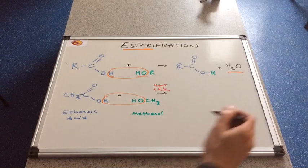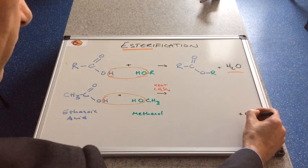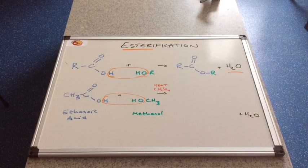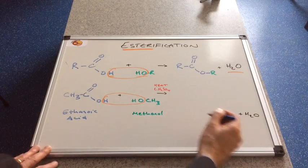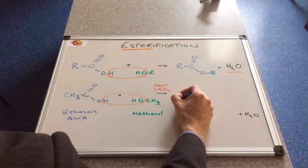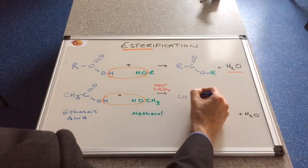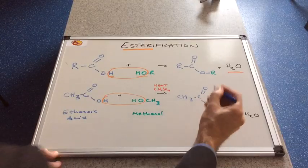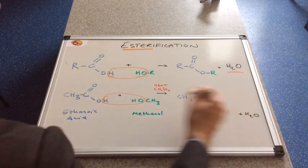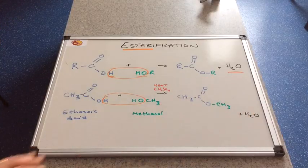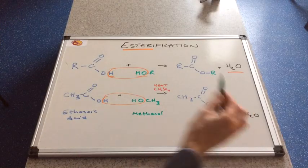And join the green and the blue pieces together. So the ester is going to look like this. We'll have CH3, C double bond O, single bond O. And then the CH3 from the alcohol would go there. So there's the ester there.